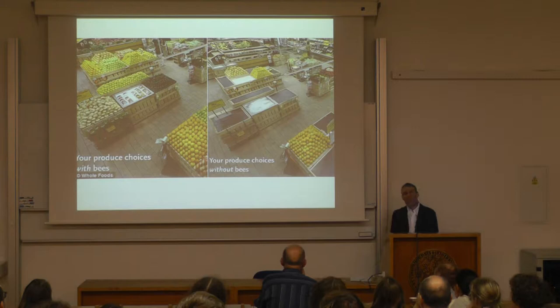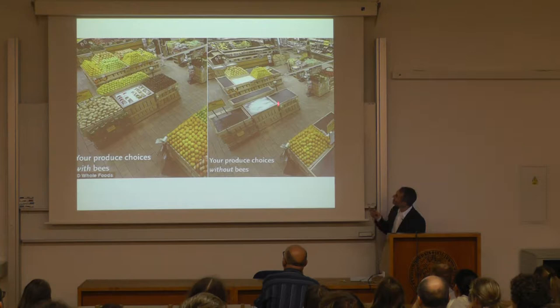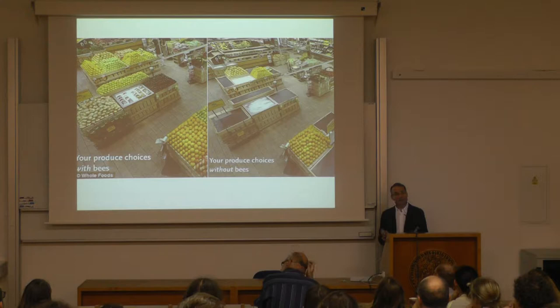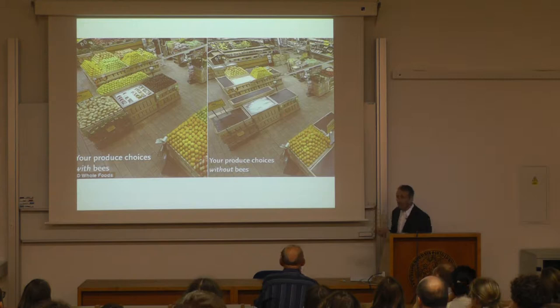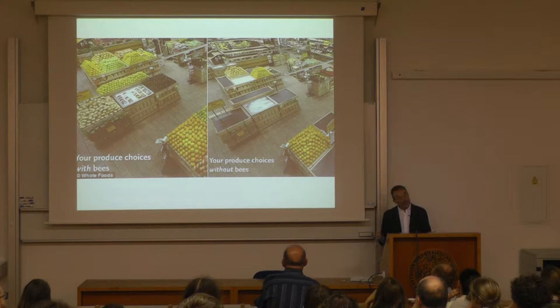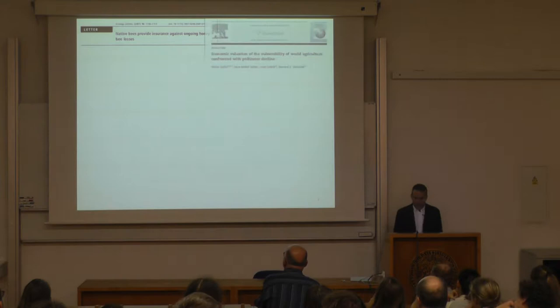Here's a nice image from a US Whole Foods store. They decked out their shelves normally on the left, then on the right excluded any foodstuffs that were insect-pollinated — to show that without insect pollinators, the diversity of foods available would be much lower and those remaining would cost more money. This emphasizes how important pollination is.